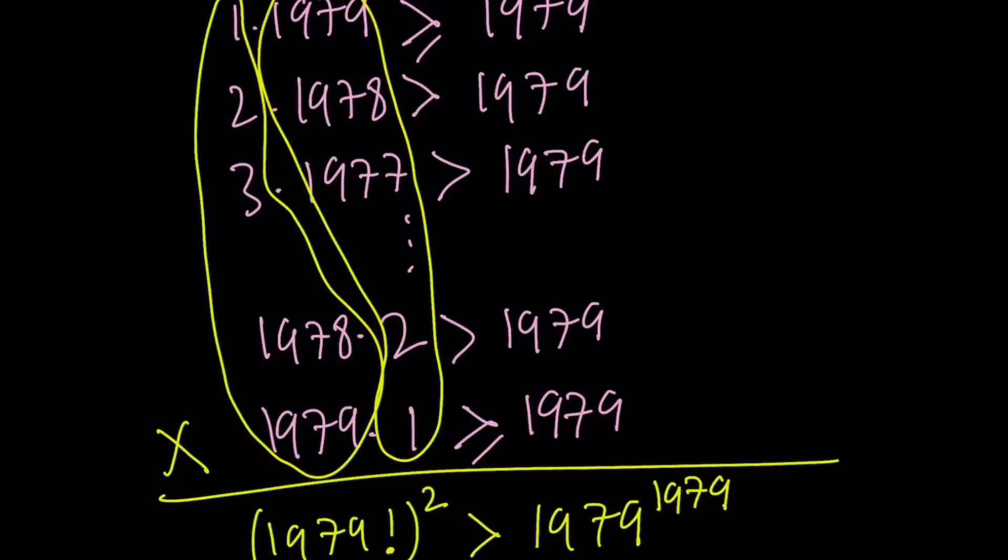So it is 1979 to the 1979th power. And I can put a greater than sign because all the numbers on the left-hand side are greater than or equal to the right, with only two being equal. But as a product, definitely the left-hand side is greater than the right-hand side.